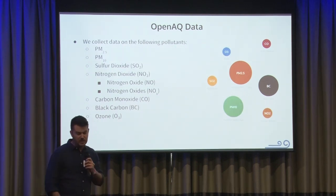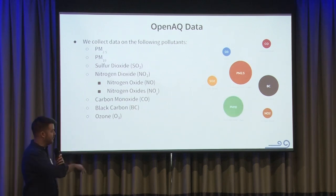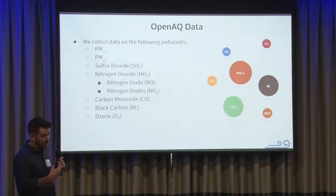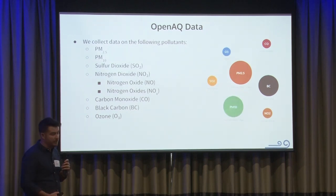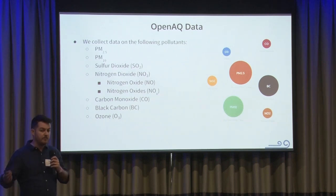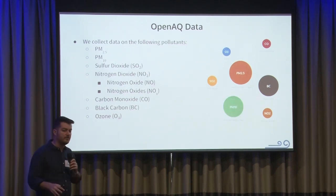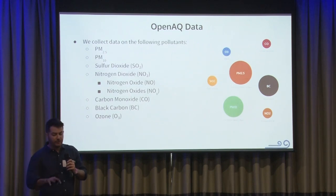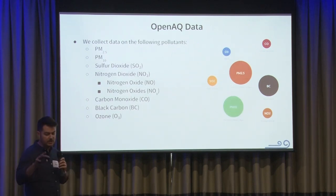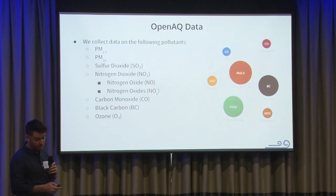We also collect some gases: sulfur dioxide, nitrogen dioxide, and a couple different flavors of nitrogen oxide — NO2, NO, and NOx, which is a generic nitrogen oxide. Carbon monoxide, black carbon — which is a subspecies of PM2.5 and comes a lot from diesel burning — and ozone. On our platform we have a couple other different types of pollutants, but these criteria ones are often most relevant in policy and advocacy.